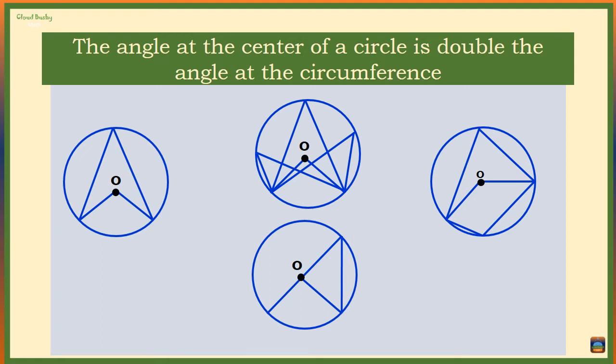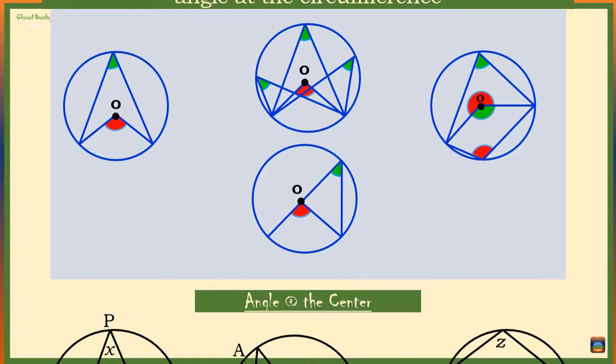Hello guys, in this video we are going to look at some examples of how to use the theorem: the angle at the center of a circle is two times the angle at the circumference. In all the diagrams, O is the center of the circle. Note that all the diagrams are not drawn to scale.